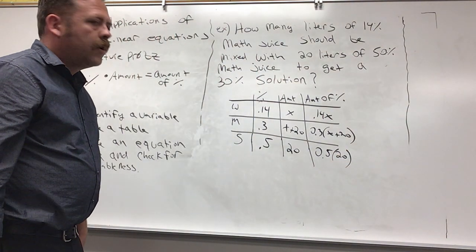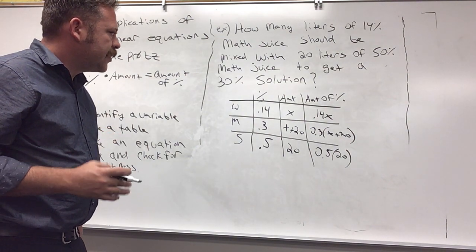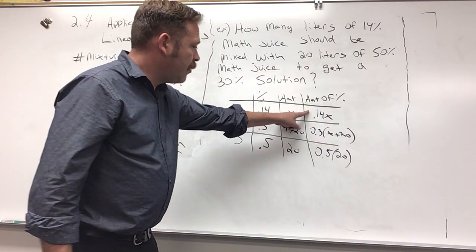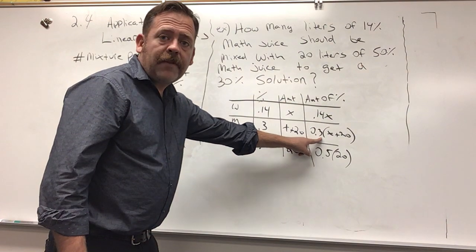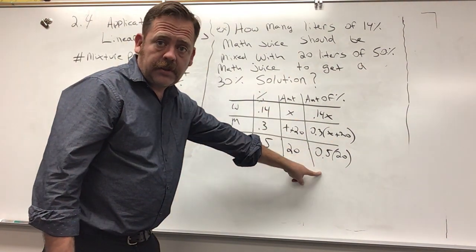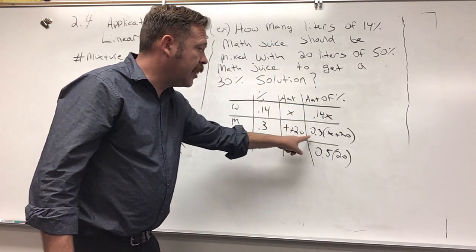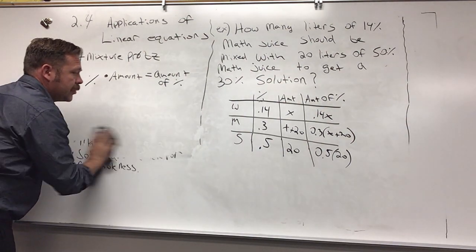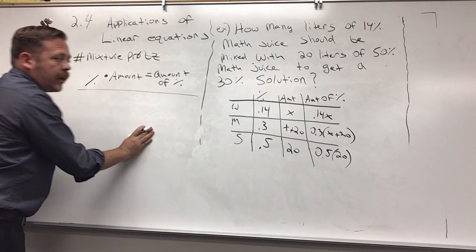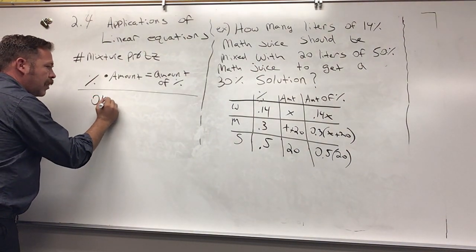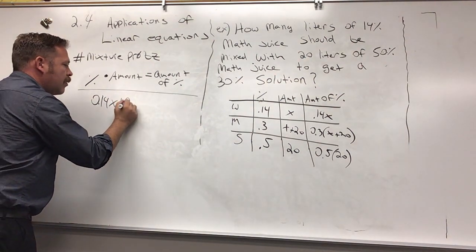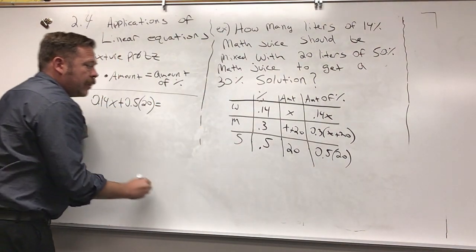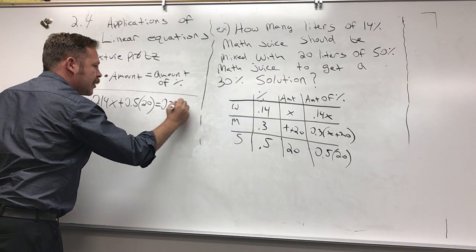Now we need to make our equation. When we're making a mixture, in this case we're diluting our mixture, we're adding something weak to something strong to get something in the middle. I'm going to take this expression, add it to this expression, and it's going to equal that one. I'm going to erase this right here and I'm going to come up right below the formula there. I have 0.14x plus 0.5 times 20 equals the middle expression there, 0.3 times x plus 20.